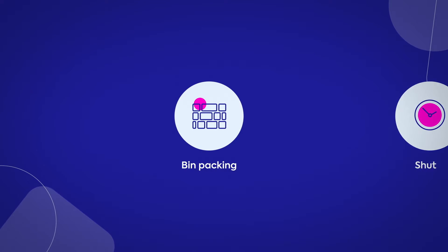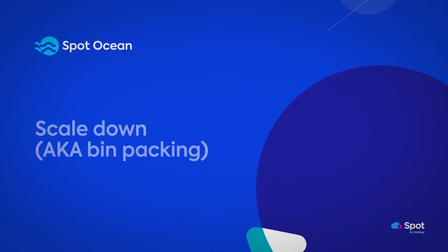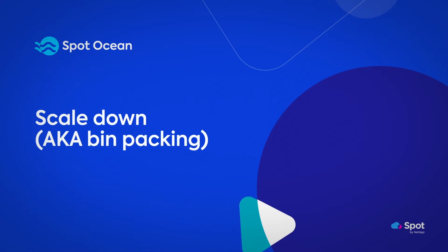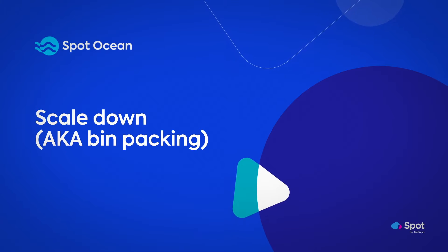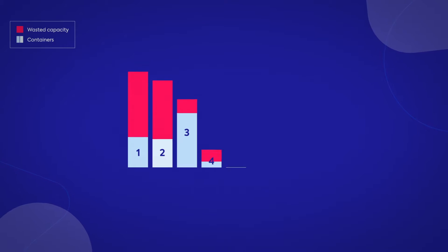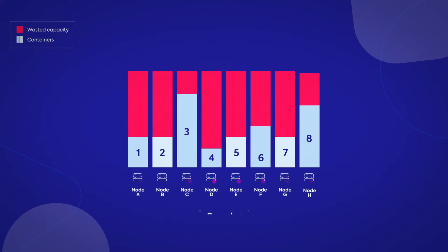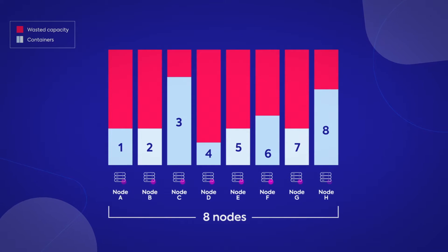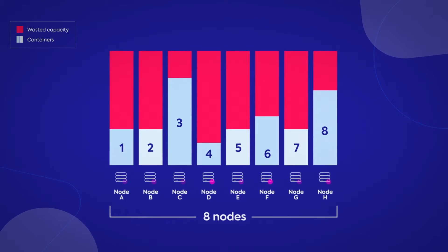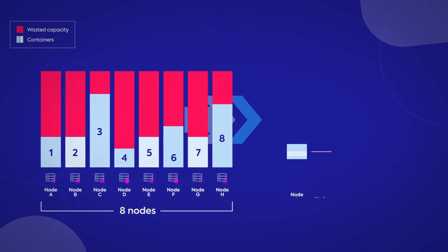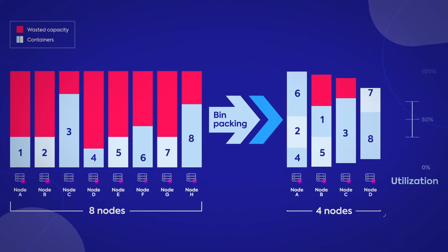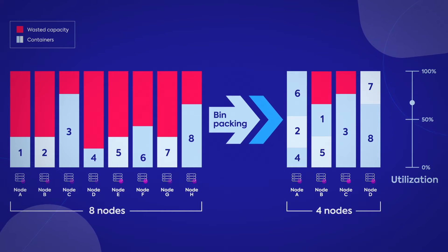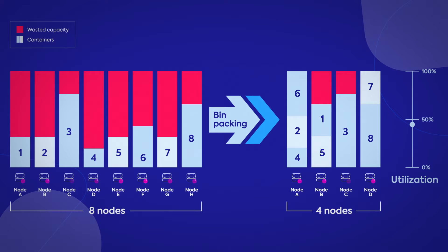First, avoid underutilized nodes with bin packing. Today, companies often use too many nodes, leading to waste. Scaling down, also known as bin packing, ensures that containers are scheduled in a way that maximizes resource utilization and minimizes wasted capacity. This technique reduces the number of overall nodes running, resulting in cost savings and a more eco-friendly posture.